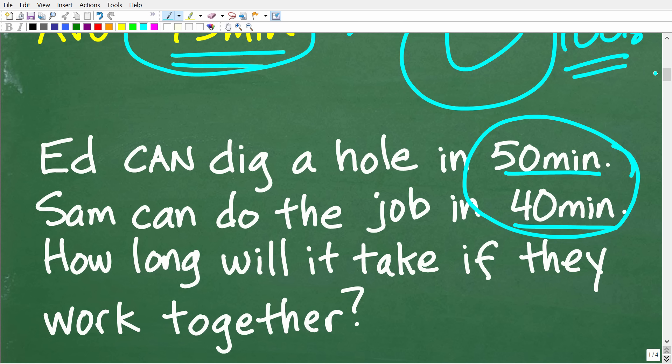Now, at first glance, that might make sense. But if we just kind of think about the problem for a second, this certainly doesn't make any sense at all. Because if Sam can do the job entirely by himself in 40 minutes and then ask Ed for help, you would think that the job would take less than 40 minutes, right?